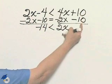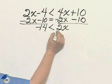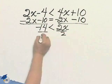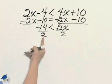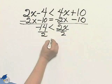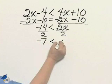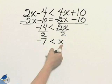10 minus 10 is 0. Let's divide by 2. Dividing by a positive does not change direction. Negative 7 is less than x.